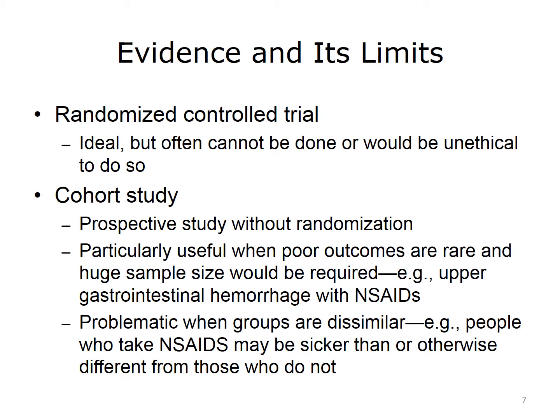Of course, cohort studies are problematic when the groups aren't similar. For example, if we follow a cohort of people and we compare those who take the NSAID and those who don't, they are obviously different people. Those who take the NSAID are more likely to have ongoing medical problems, particularly those who require these drugs. So we don't get that benefit of randomization.